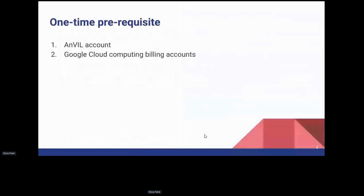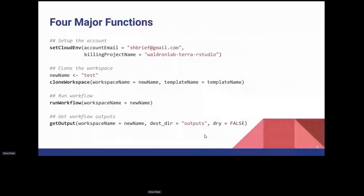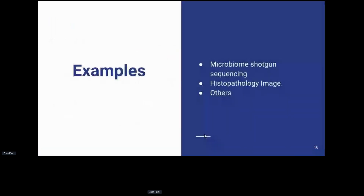To use the AnVIL workflow package you need AnVIL and Google Cloud billing accounts — your AnVIL account is often your Gmail address. These are one-time prerequisites. You then run workflows using four major functions: set_cloud_auth() takes your account information controlling access rights; the billing project name covers compute cost; clone_workspace() gives you your own copy of a workspace; run_workflow() executes the workflow; and get_output() downloads results.